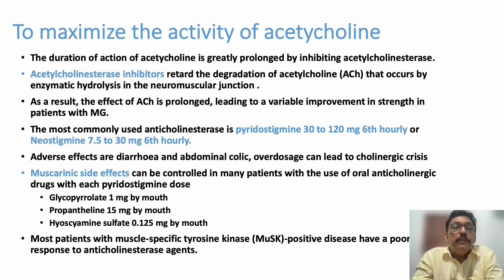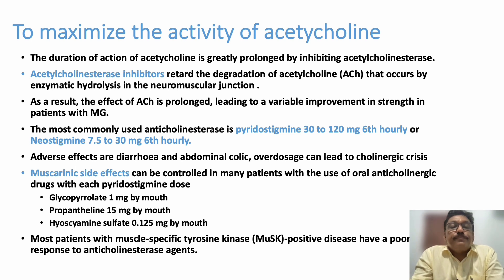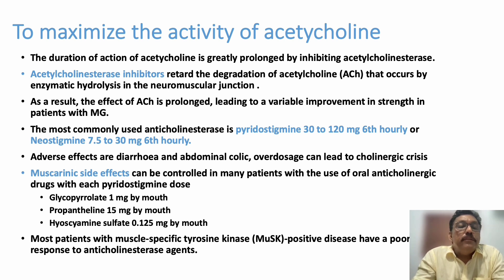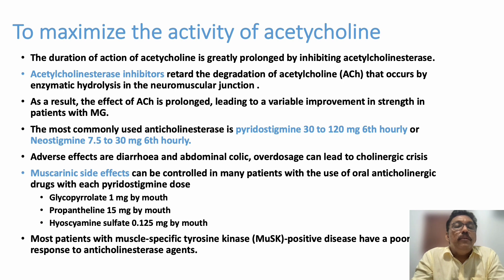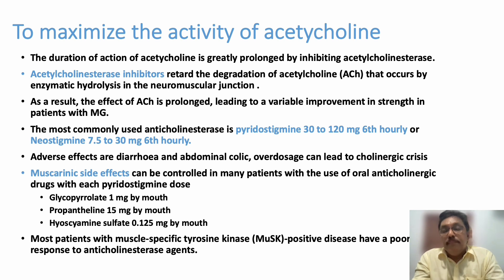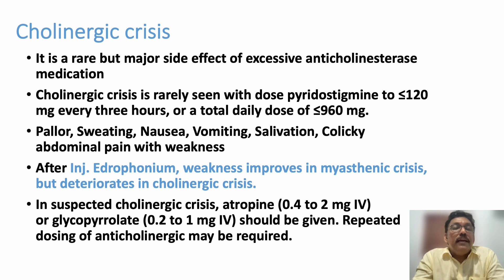To maximize the activity of acetylcholine, acetylcholinesterase inhibitors can be used — pyridostigmine 30–120 mg six-hourly or neostigmine 7.5–30 mg six-hourly. These can produce muscarinic effects that can be covered with glycopyrrolate, propantheline, or hyoscine. Anticholinesterase inhibitors retard the enzymatic hydrolysis of acetylcholine at the neuromuscular junction, prolonging its effect.